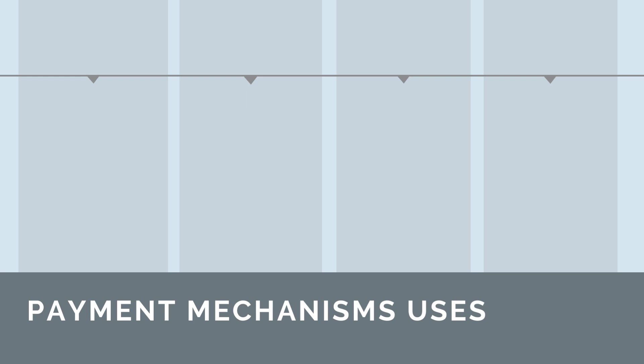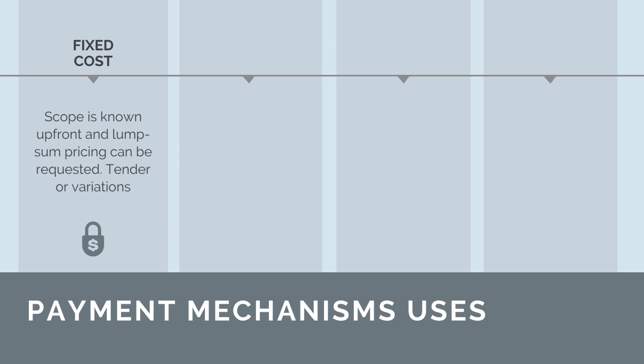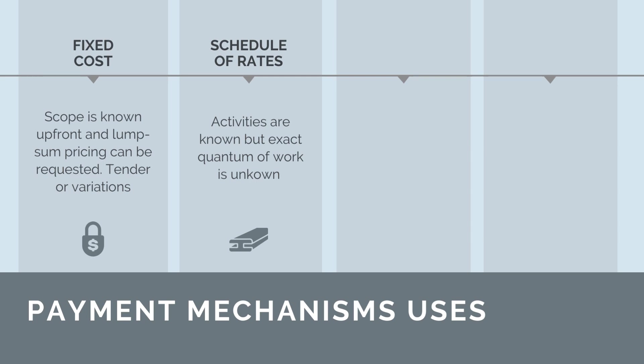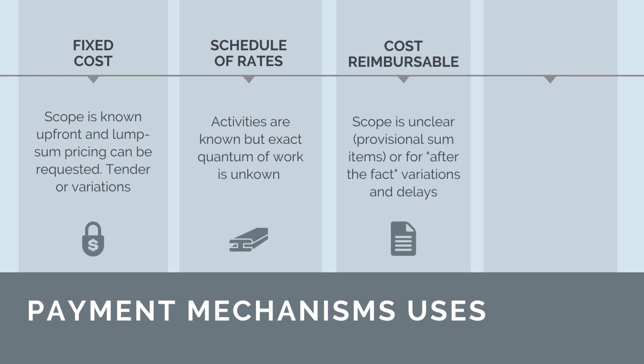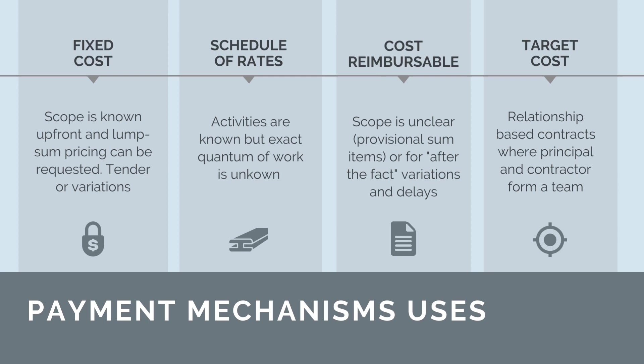Multiple different payment mechanisms will likely be used in the one contract. Fixed cost pricing is used when the scope is known up front and a fixed fee can be requested — this occurs when contractors are quoting competitively before contract award, or to price variations during project delivery. A schedule of rates contract is used when the activities are known but the exact quantum of work is unclear. Works are delivered at cost plus when the scope is unclear, typically as provisional sum items, or for variations and delays that are retrospective — for example, if a contractor was waiting on site access and had four workers and a crane waiting for five hours, they would be paid the actual costs of the plant and machinery delayed. Target cost mechanisms are used almost exclusively in relationship-based contracts.